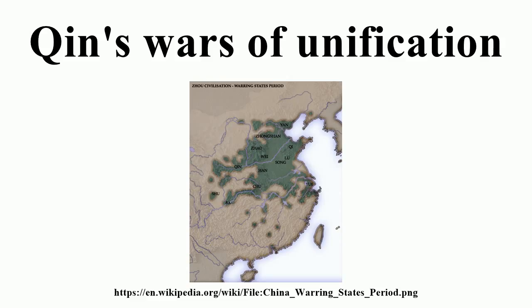Over the course of the Warring States period, the Qin state had evolved to become the most powerful of the seven major states in China. In 238 BC, Ying Zheng came to the throne of Qin after eliminating his political rivals Lu Buwei and Lao Ai. With help from Li Si, Wei Liao and others, Ying Zheng formulated a plan for conquering the other six major states and unifying China. The plan, which focused on annexing each state individually, was based on allying with distant states and attacking nearby ones. Its key steps were: ally with Yan and Qi, hold down Wei and Chu, then conquer Han and Zhao.